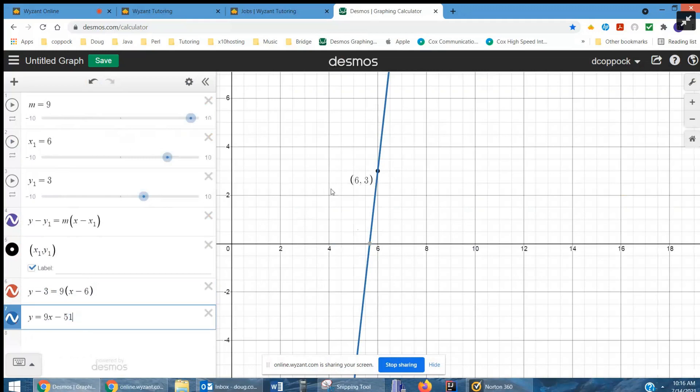And you can see that these lines are identical. If I move stuff around, like change the slope, I get a different line. If I change the x and y coordinates, I can get a different line.